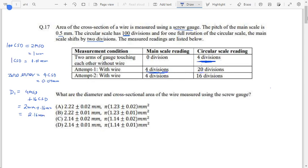Similarly, reading two will be equals to 2 mm. Four main scale divisions plus 16 minus 4, because 4 is the zero error. That is 12 circular scale divisions. So that means this will be equals to 2 mm plus 0.12 mm. So this is 2.12 mm.